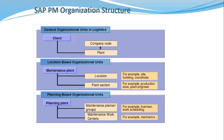The SAP PM Organizational Structure contains the client, the company code, the plants, maintenance plants, and planning plants. The client is the highest level in the SAP ERP system hierarchy. Each client is an independent unit with separate master records and a complete set of tables and data. The company code is an organizational unit used in accounting, used to structure the business organization from a financial accounting perspective.